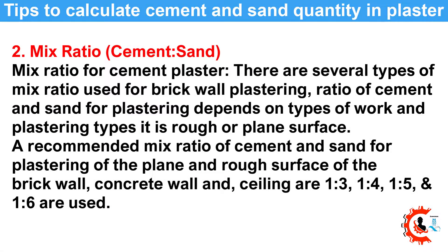The second factor is the mix ratio of cement and sand. There are several types of mix ratio used for brick wall plastering. The ratio depends on the type of work and whether the surface is rough or plain. Recommended mix ratios for the plain and rough surface of brick wall, concrete wall and ceiling are 1:3, 1:4, 1:5 and 1:6.